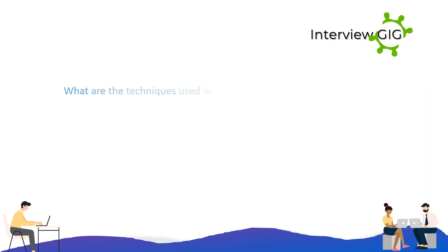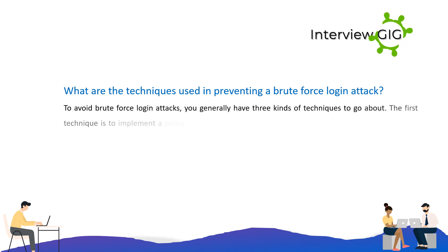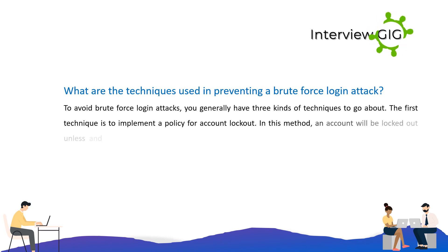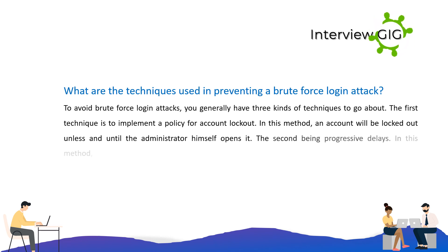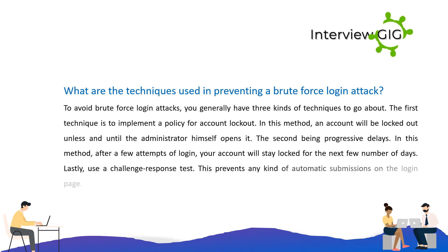What are the techniques used in preventing a brute force login attack? There are generally three kinds of techniques. The first is to implement a policy for account lockout — an account will be locked out unless the administrator himself opens it. The second is progressive delays — after a few login attempts, your account will stay locked for the next few days. Lastly, use a challenge-response test, which prevents any kind of automatic submissions on the login page.